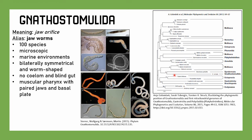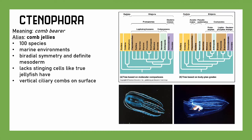We have Ctenophora, which means 'comb bearer.' These are known as comb jellies — which is confusing because there's Cnidaria with true jellyfish and box jellyfish, but these aren't those. They're their own phylum. About 100 species, marine. Biradially symmetrical with a definite mesoderm. The big difference from jellyfish is they lack stinging cells — no nematocysts. They do have vertical ciliary combs on the surface — that's where the 'comb' comes from. They're actually very closely related to Cnidaria, whether you look at molecular comparisons or body plans.